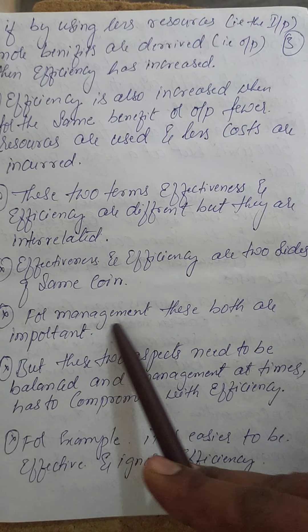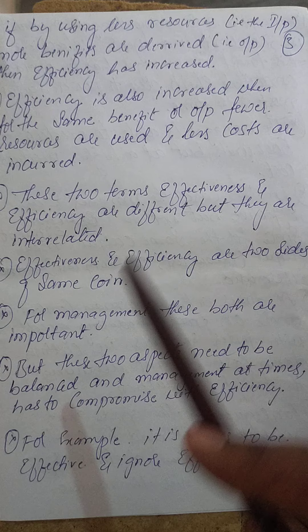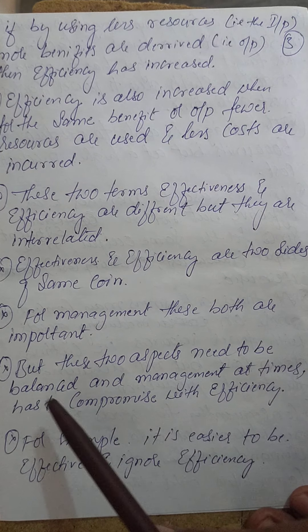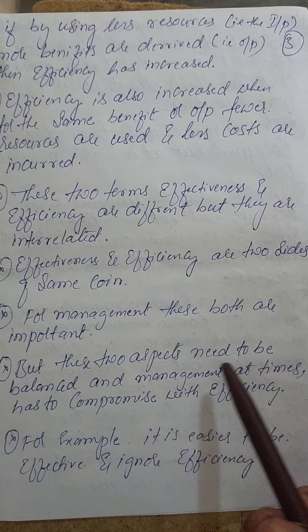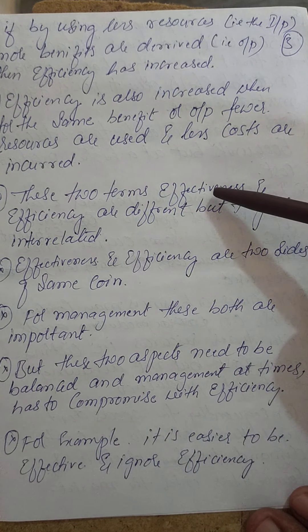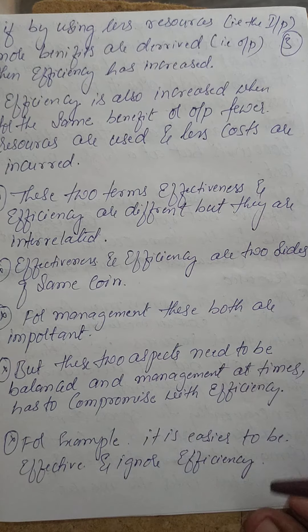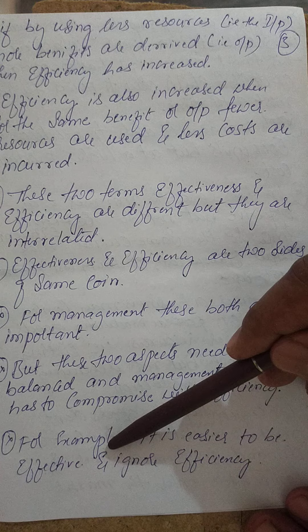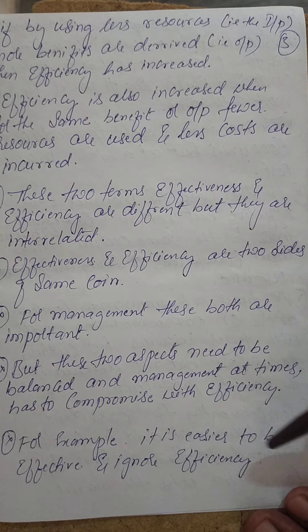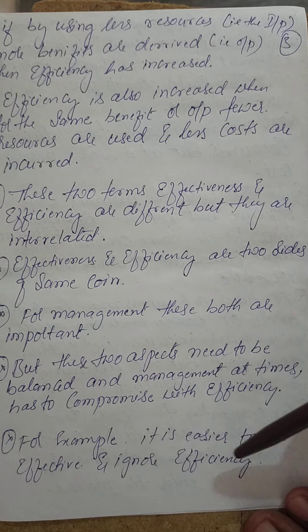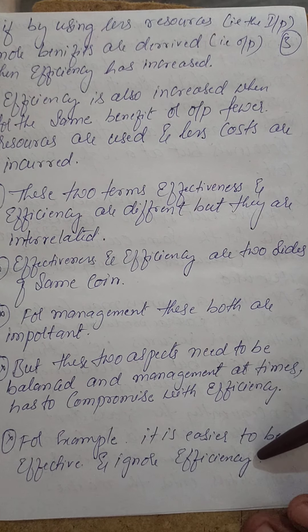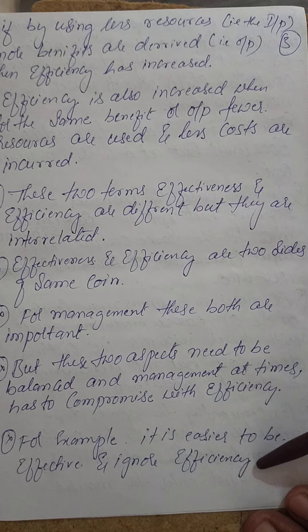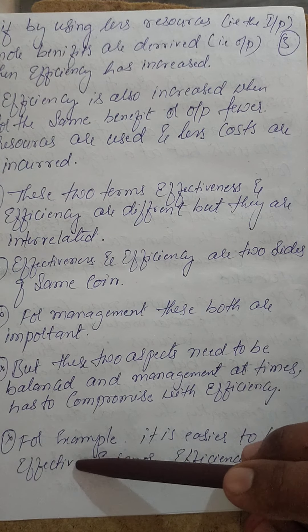Both effectiveness and efficiency are most important for management and need to be balanced. It is easier to always be effective, but you cannot always maintain efficiency. Let us see by an example how effectiveness and efficiency work.